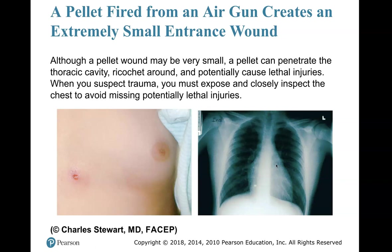A pellet fired from an air gun creates an extremely small entrance wound. Although a pellet wound may appear very small, a pellet can penetrate the thoracic cavity, ricochet around, and potentially cause lethal injuries. When you suspect trauma, you must expose and closely inspect the chest to avoid missing potentially lethal injuries — it doesn't look that bad from the outside. You can't tell if the pellet went in or not, but you have to assume it did with your high index of suspicion.